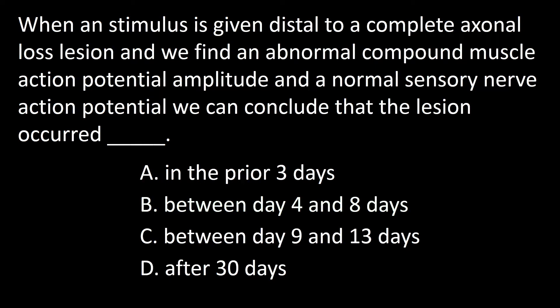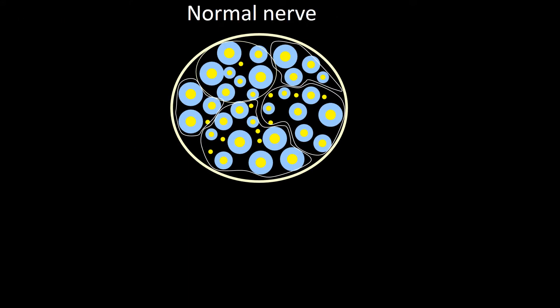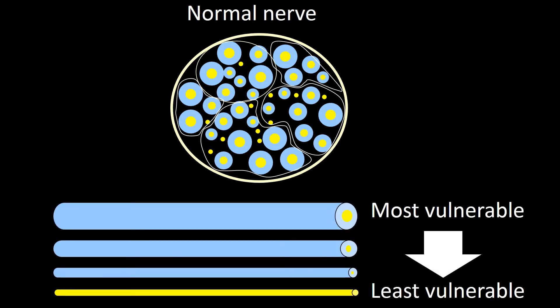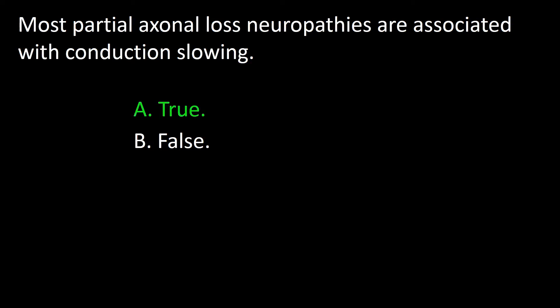Next question: most partial axon loss neuropathies are associated with conduction slowing. A: True, B: False. Most pathological processes inflict sooner and more extensive damage onto thick myelinated fibers than onto thin myelinated fibers, and least damage to unmyelinated fibers. The result is out-of-proportion loss of myelinated axons, thus decreasing the overall conduction of the affected nerve. So the answer to this question is A.